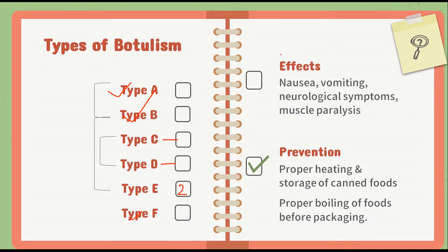Effects caused by botulism include nausea, vomiting, neurological symptoms like double vision, dilated pupils, or difficulty in swallowing, and in serious cases it may cause muscle paralysis. Prevention includes proper heating and proper storage of canned foods, rejection of swollen cans or cans with dents, and suspected foods should be properly boiled before packaging.